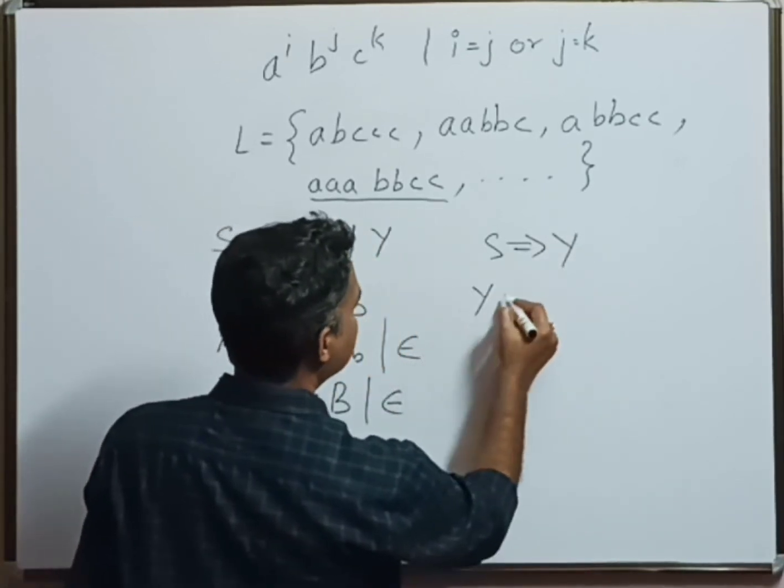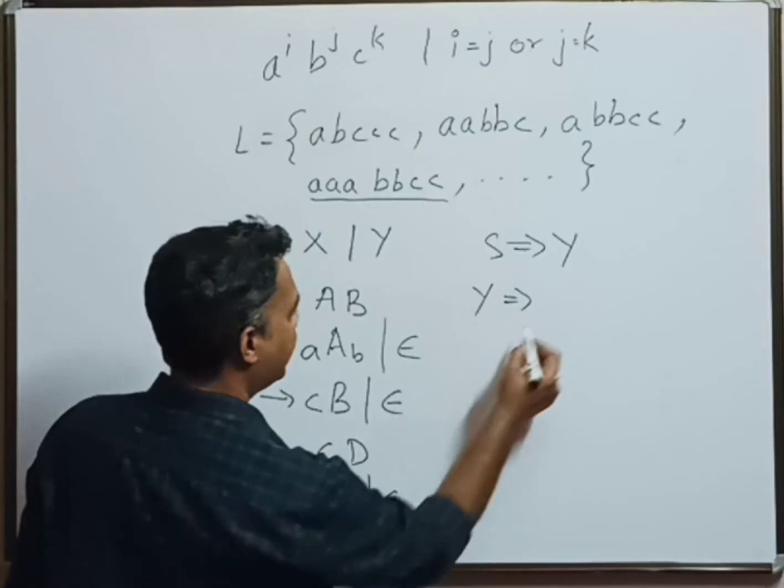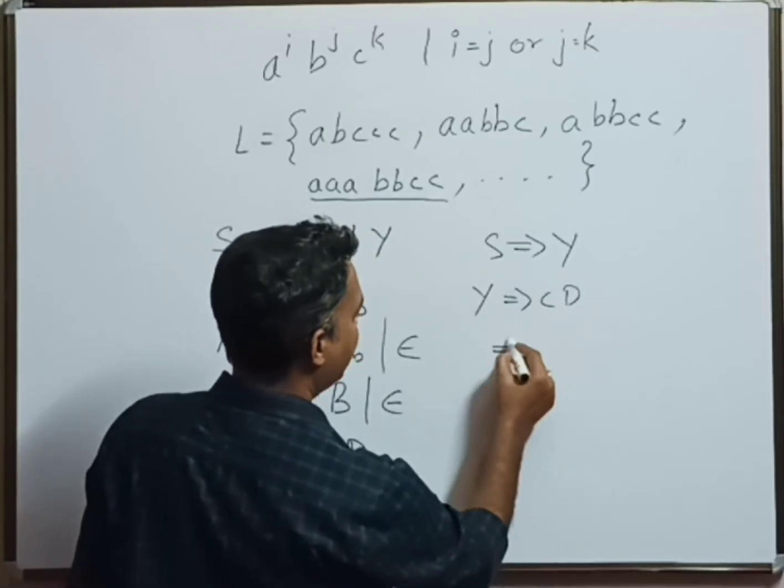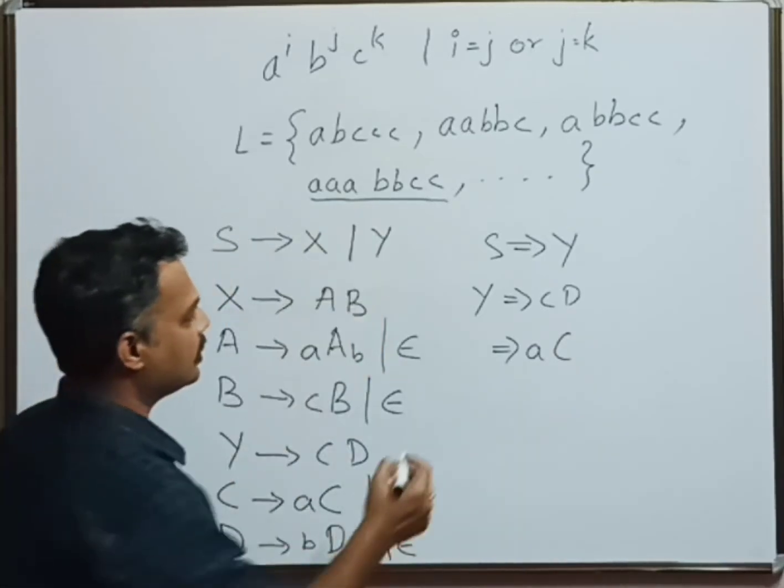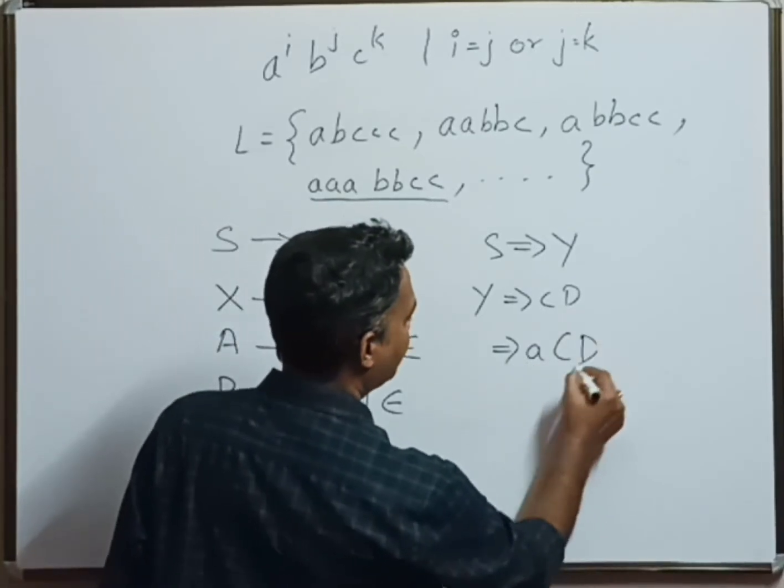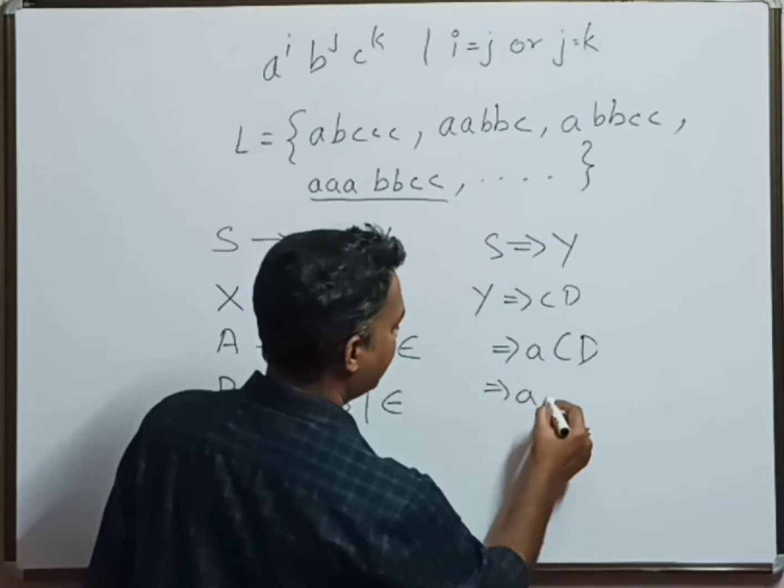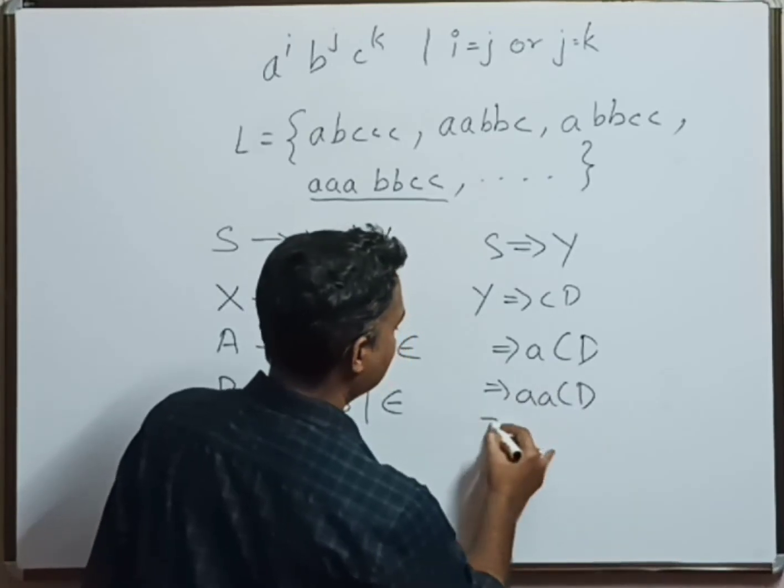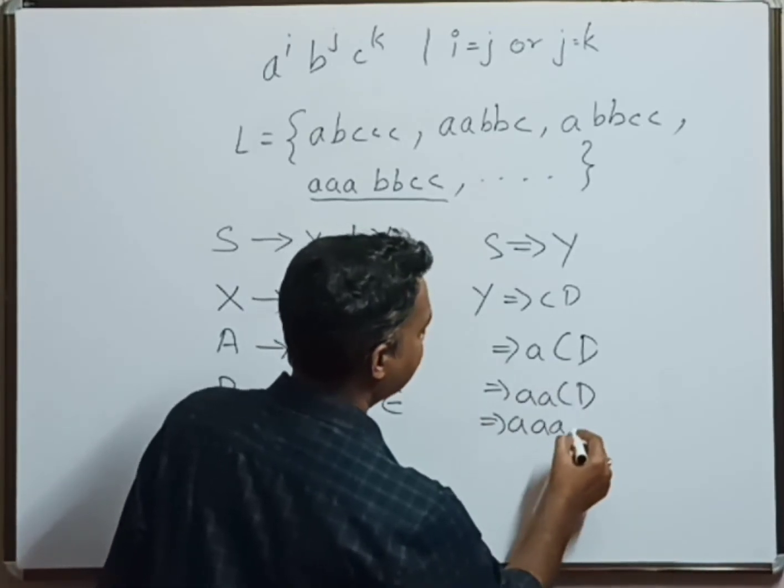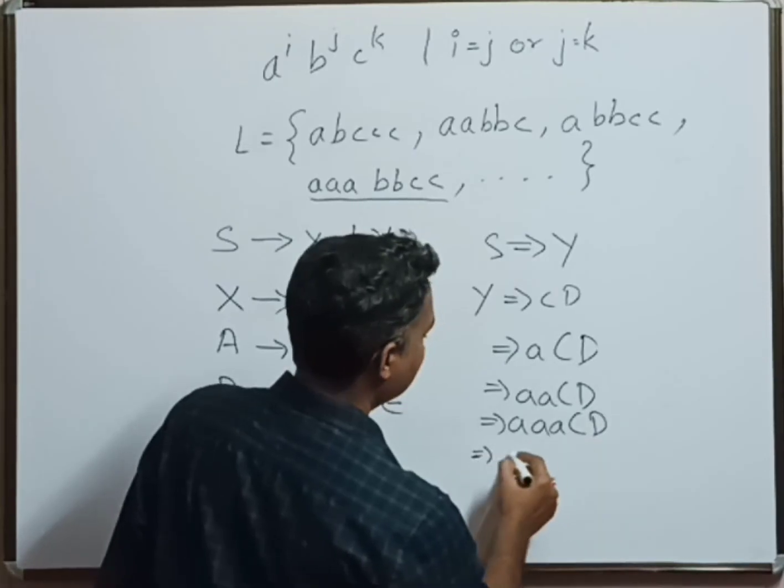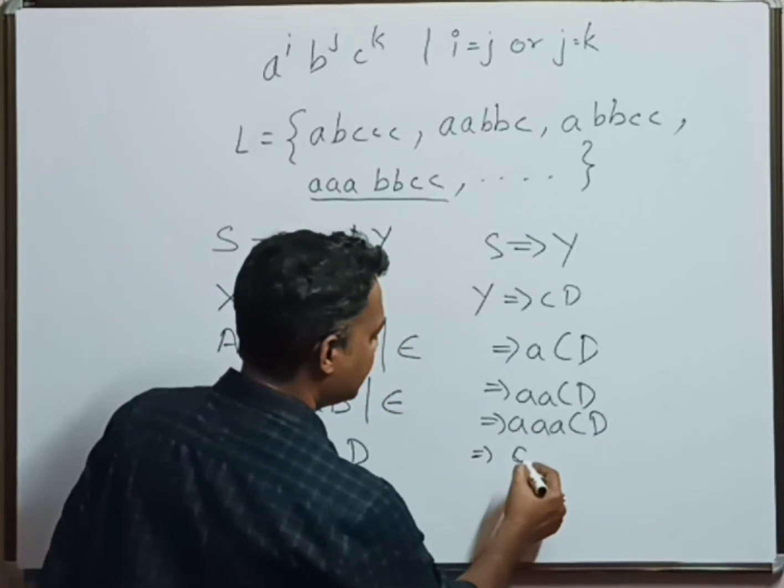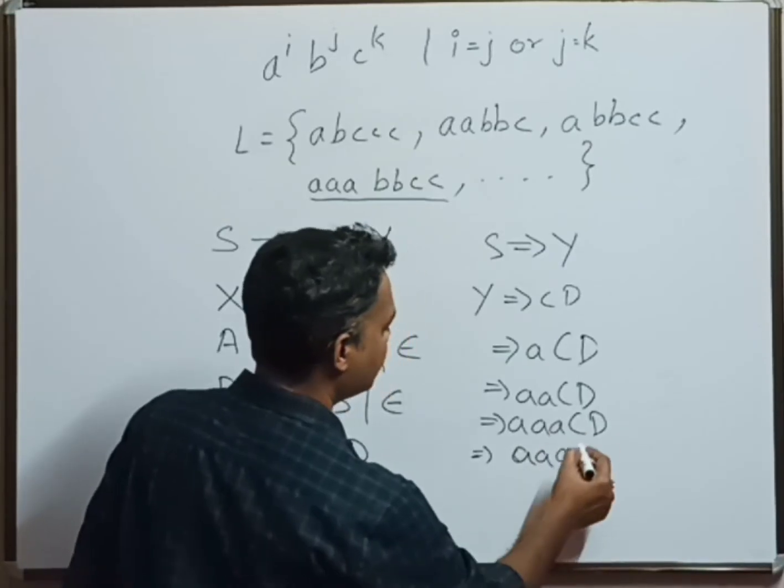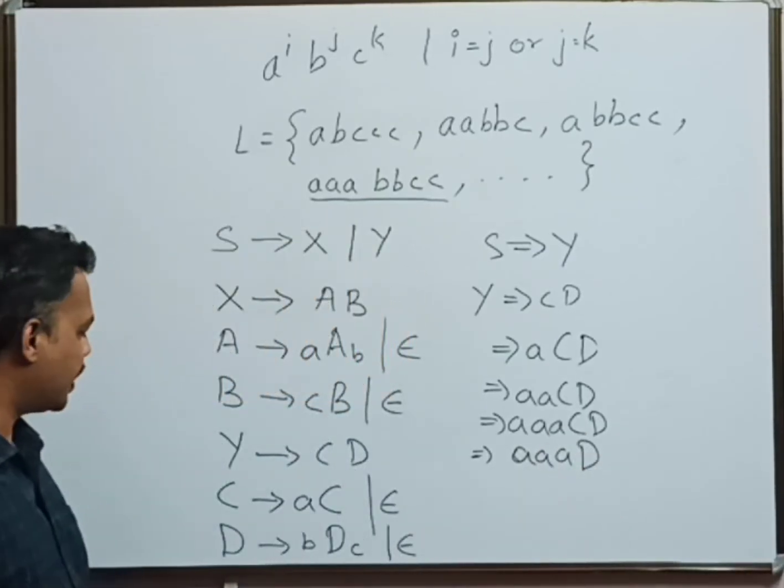Now Y is given by CD, and C is nothing but aC. We need three A's, so I will apply three times that rule: aC, aaC, aaaC. Now I will replace C with epsilon. That is aaaε. So I got D, and D will be there.